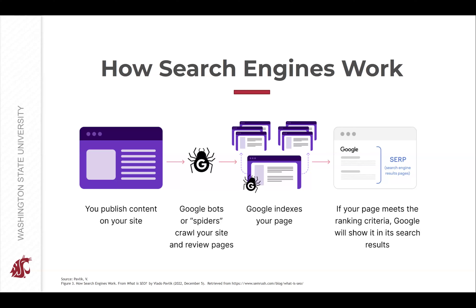Next, Google analyzes each page and tries to make sense of what that page is about. It may store this information in a Google index, which is just a huge database of web pages. When a user enters a query, Google determines which pages are the best in terms of both quality and relevance, and then ranks them on search engine results pages, otherwise known as SERPs.